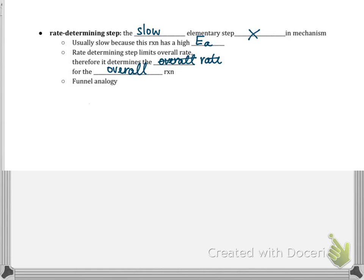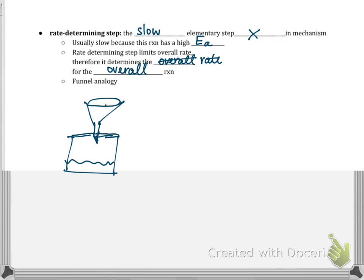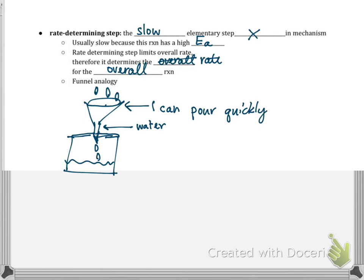Let's think about a funnel analogy. I'm going to draw a funnel and a beaker below it. We're pouring water through the funnel — the water drips out down into the beaker. I can pour really quickly through the top of the funnel, loading the water in up top, but does that mean the water gets down to the beaker quickly? No. The water is only going to flow as fast as it can through the narrowest part of the funnel, so the beaker fills at a limited rate.